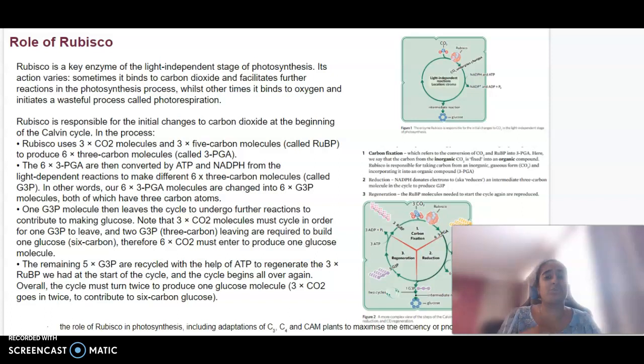Rubisco is responsible for the initial changes to carbon dioxide at the beginning of the Calvin cycle. Rubisco uses carbon dioxide molecules and a five carbon molecule called RUBP to produce six three carbon molecules called 3-PGA. The six 3-PGA molecules are then converted using ATP and NADPH from the light dependent reaction into six G3P molecules. In other words, 3-PGA molecules are changed into six G3P molecules, all containing three carbon atoms. One G3P molecule leaves the cycle and undergoes further reactions to create glucose.